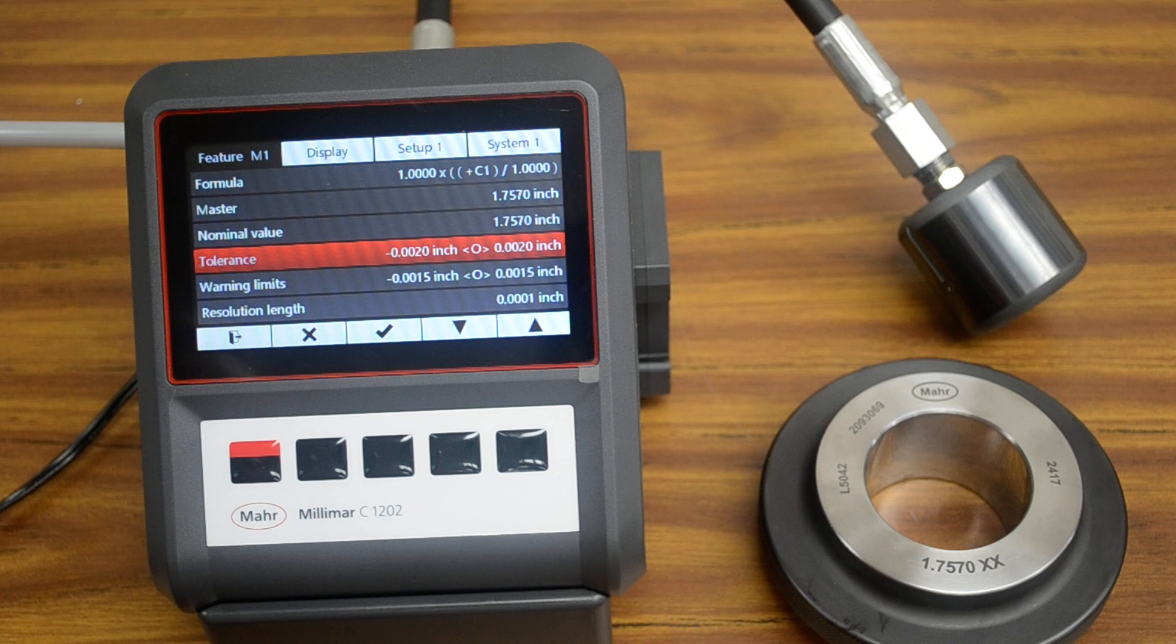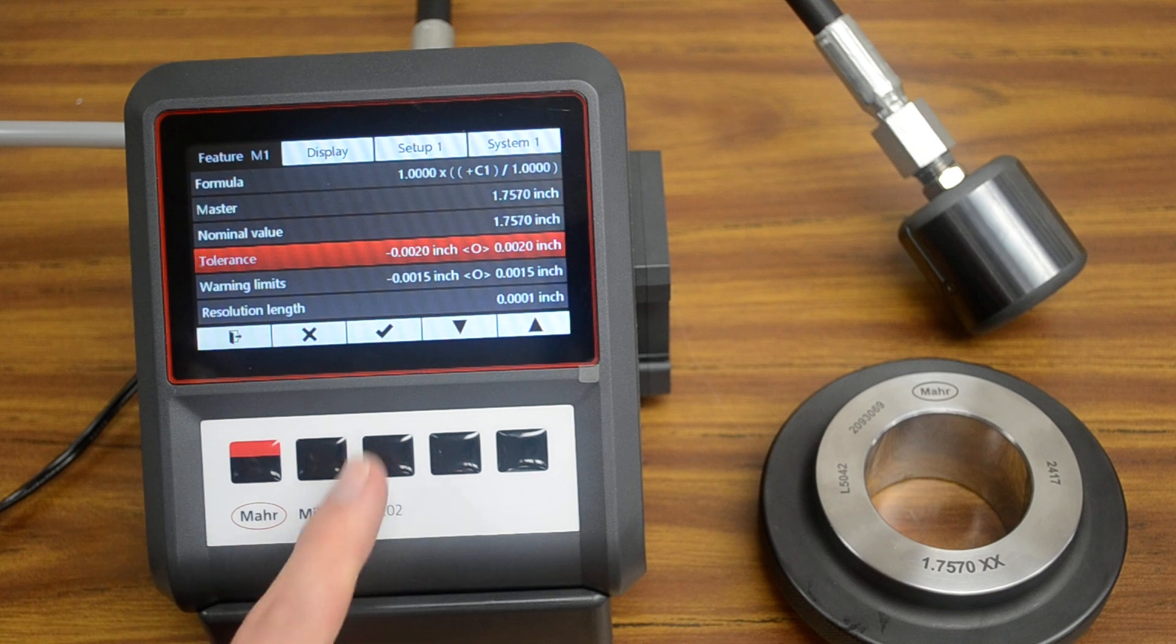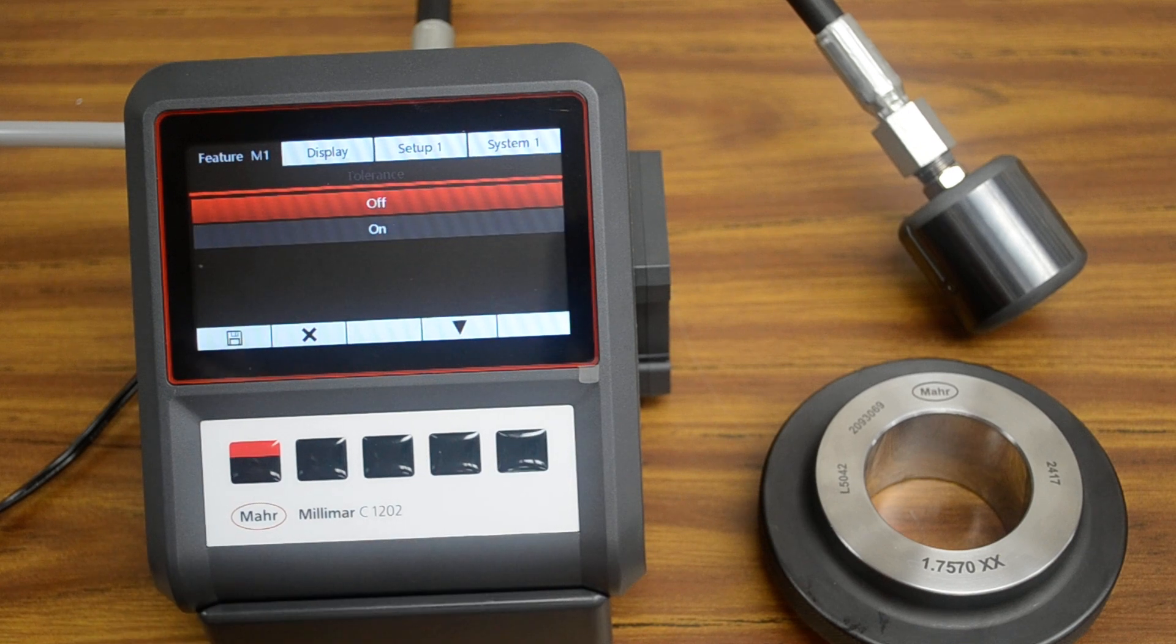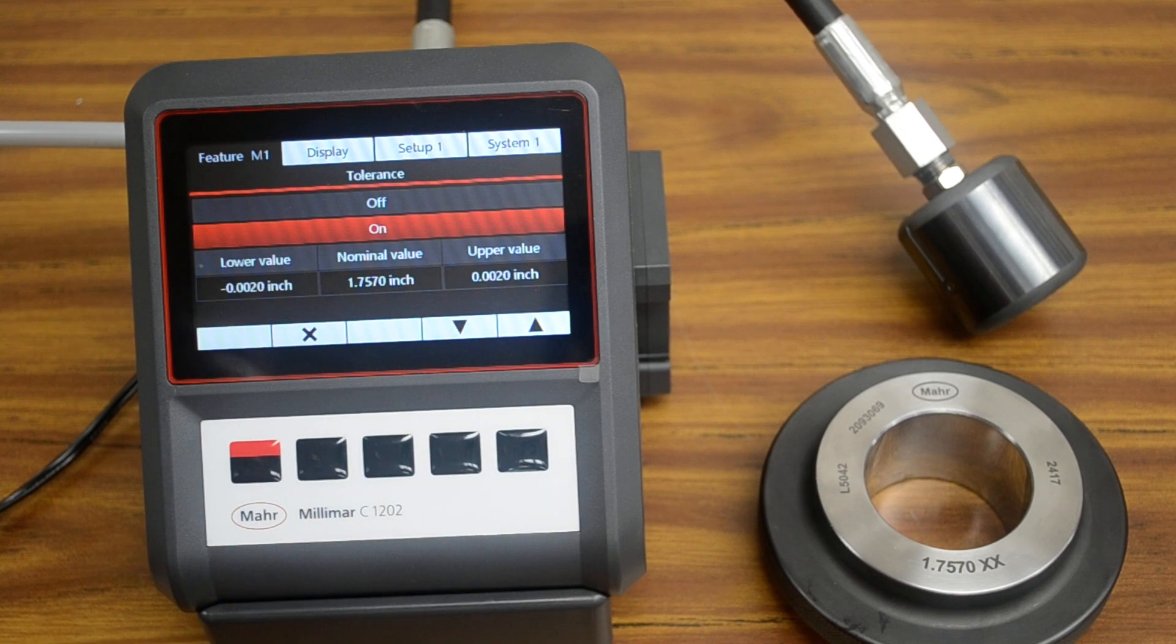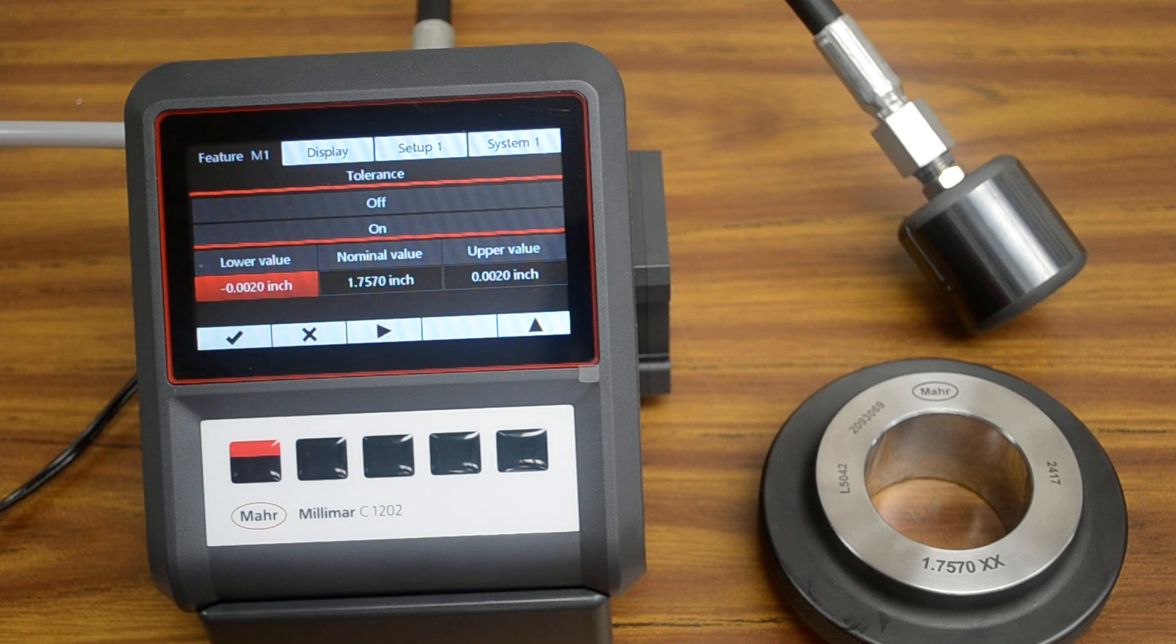In tolerance, if you want to set up tolerance limits, it's going to be an incremental number, plus or minus from the nominal value. We're going to press the check mark to open it, and if you are not using it and it's turned off, it's going to look like this. When you press the down arrow to on, you get these options. So you press down again, and now it's selected our lower value.